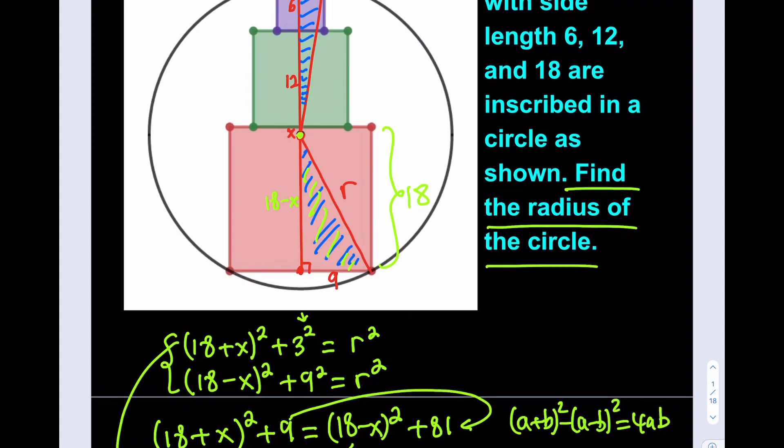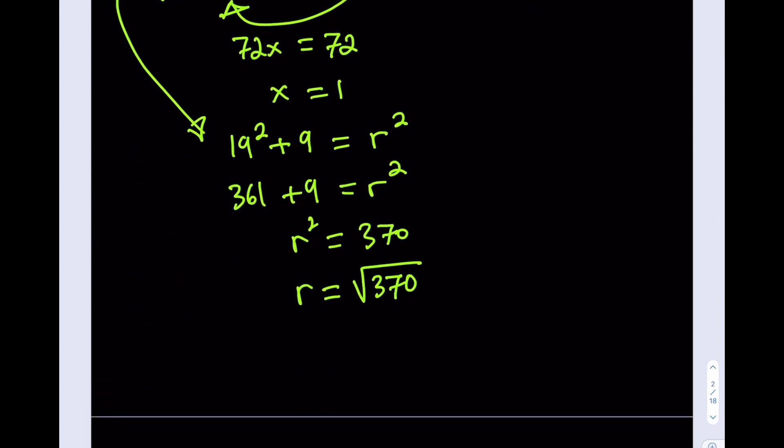Can we simplify this? What's the square root of 370? It is 2 times 185. 185 is 37 times 5. So it's 2 times 5 times 37. Look at this. 37 is prime. 2 is prime. 5 is prime. They're all primes. What does that mean? We don't have any perfect squares. Unfortunately. Too bad. But that is the answer. The radius of the circle is going to be square root of 370.